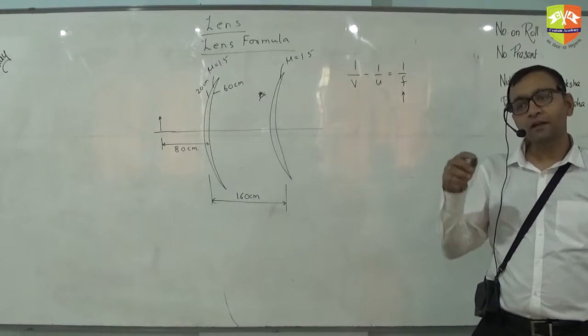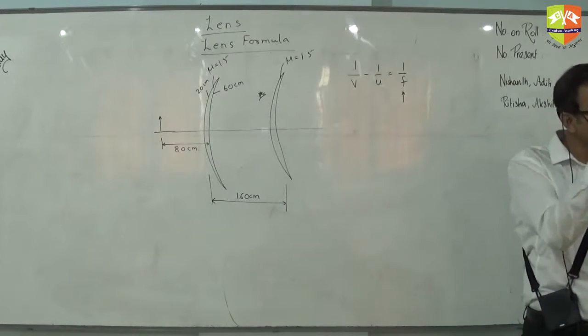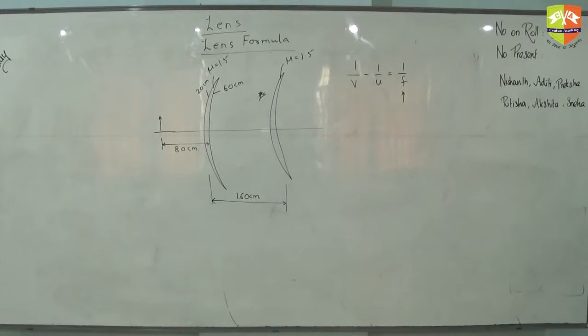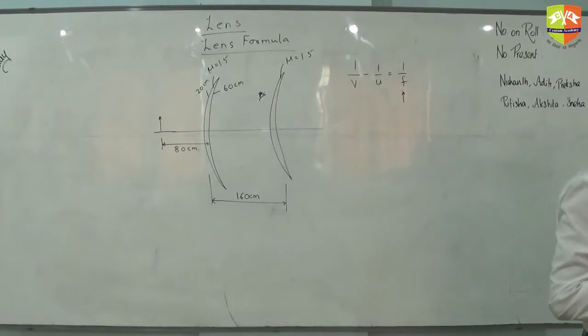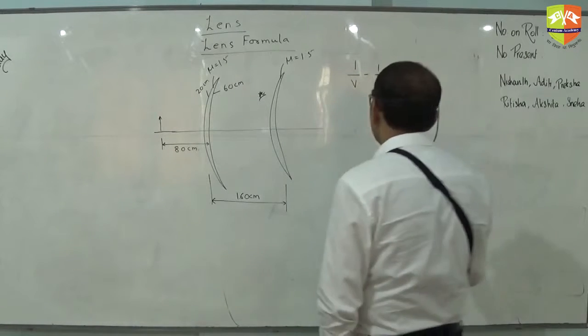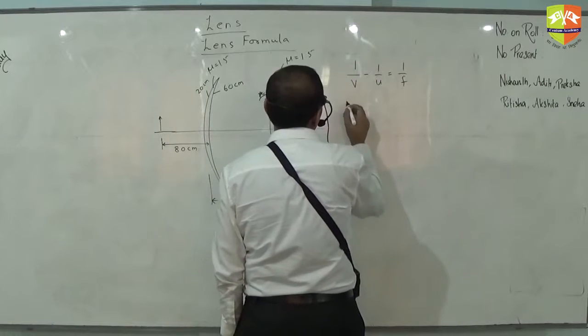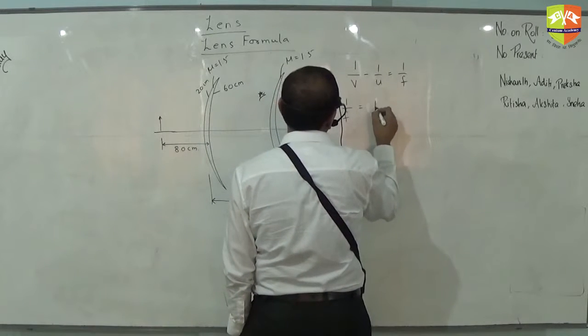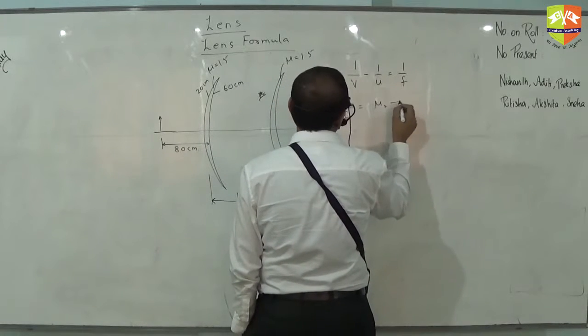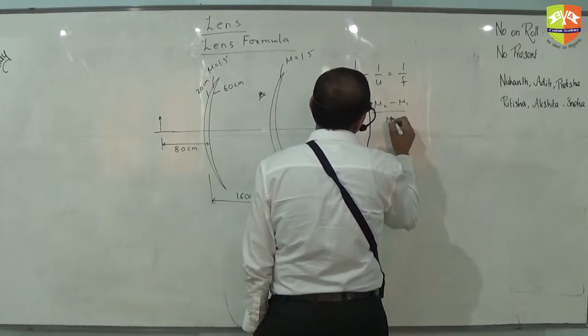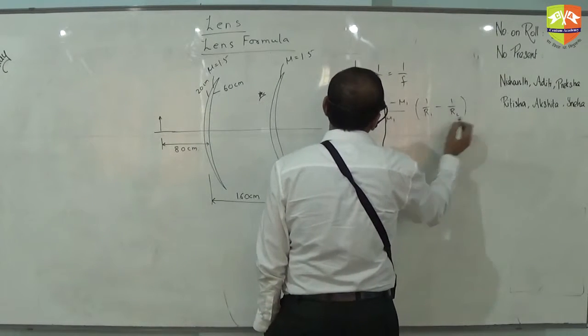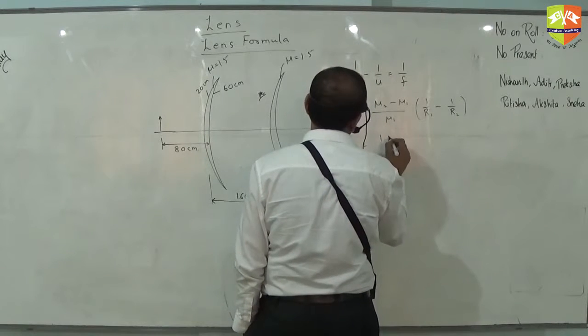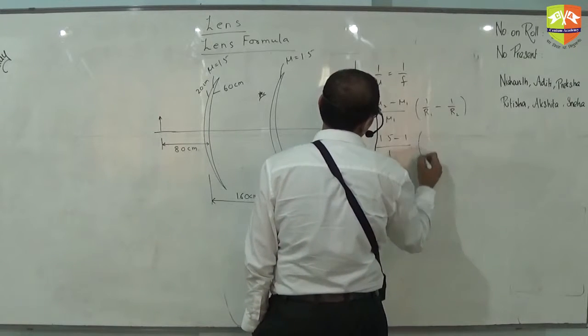Unless you divide it and find out f and then putting it here. Anybody got the answer? 240? Okay, let us quickly solve this. 1/f will be equal to (μ2 - μ1)/μ1 times (1/r1 - 1/r2). When I substitute here, 1.5 minus 1 divided by 1,